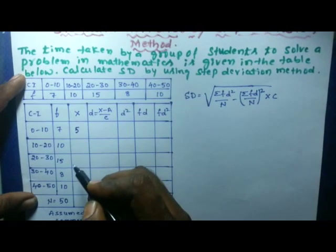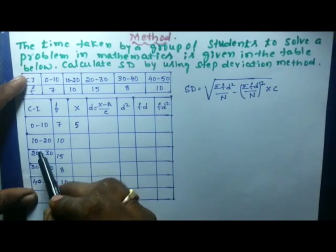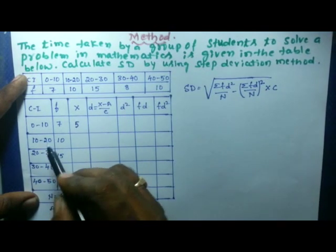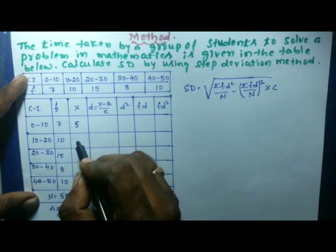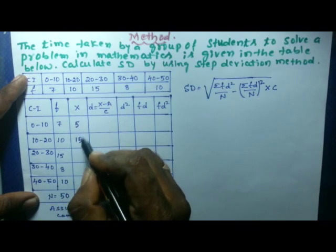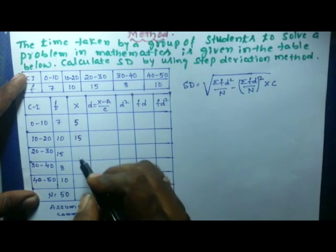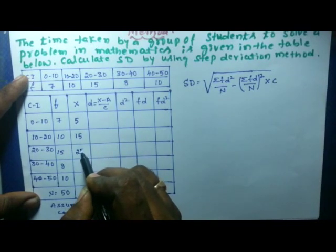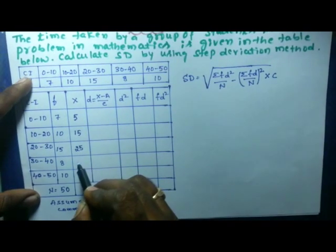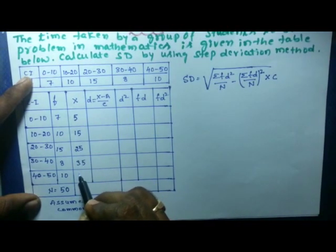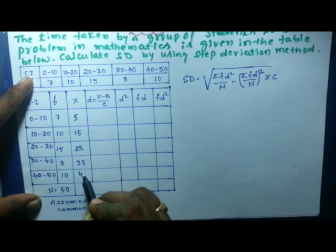Similarly, for 10–20: (10+20)/2 = 15. The difference between consecutive midpoints is 10. So the remaining midpoints are 25, 35, and 45.